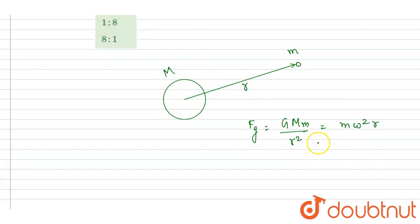So from here, you can see this m will get cancelled out. Mass of the earth and G is constant. So ω² is inversely proportional to the r³.